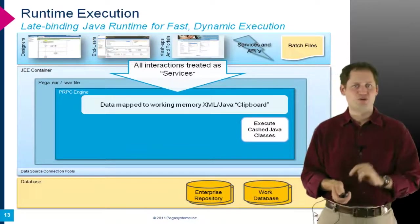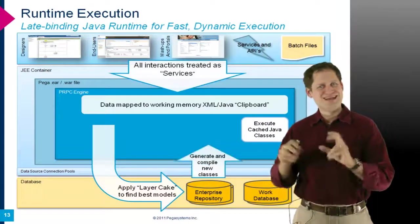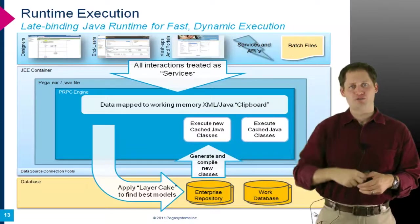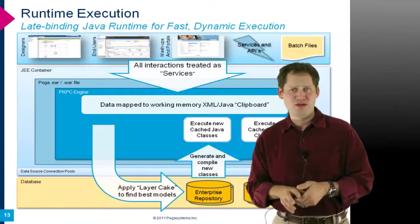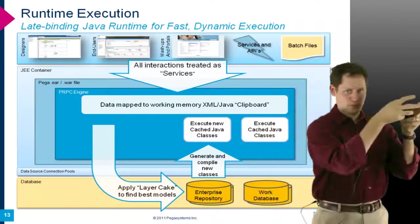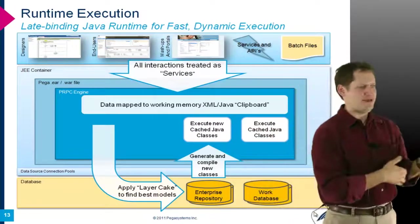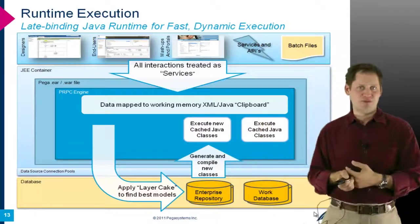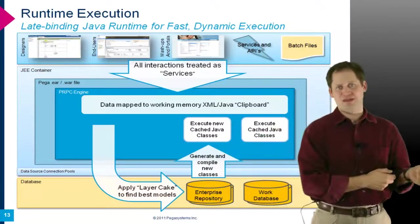If the engine detects from the repository that something has changed, or if it has never run a particular version before, it dynamically assembles and compiles Java classes for that rule, caches them, and executes them — so subsequent callers fire Java from memory. PEGA can pre-load all Java classes and stores them back into the enterprise repository so that in a multi-node system one node can assemble a process and all others benefit. This late binding to Java delivers execution speed and tunability while supporting multiple concurrent versions, layer cake specialization, and real-time change without redeployment.